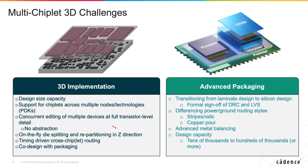Back to the slides: the challenge for package designers is the transition from laminate to silicon design or something built in a foundry. In the past they had a very informal process of running DFM and a board house or substrate provider built it, and an OSAT did the assembly and test. Now when building something on silicon, a very big change happens: they need a formal sign-off of DRC and LVS and, to some degree, metal fill.